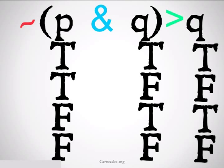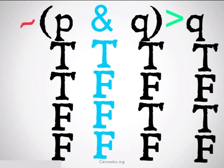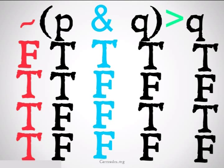First, we do the variables. Pretty standard. The trues and falses going down. We do the conjunction in the middle. We remember the only time a conjunction is true is when both of the variables that are conjoined are true, and the rest are going to be false. Next, we're going to do a negation of that blue column in the middle. So false at the top, true for the rest of it.